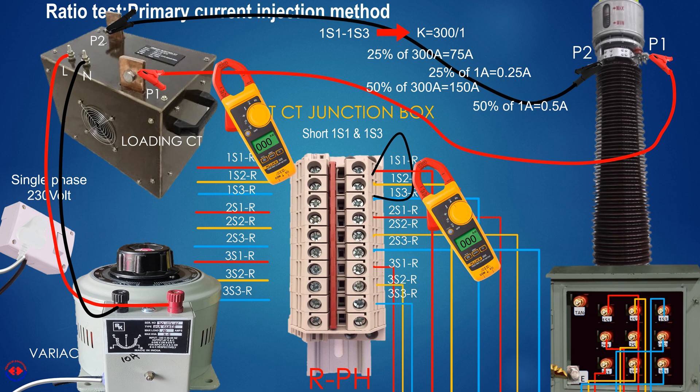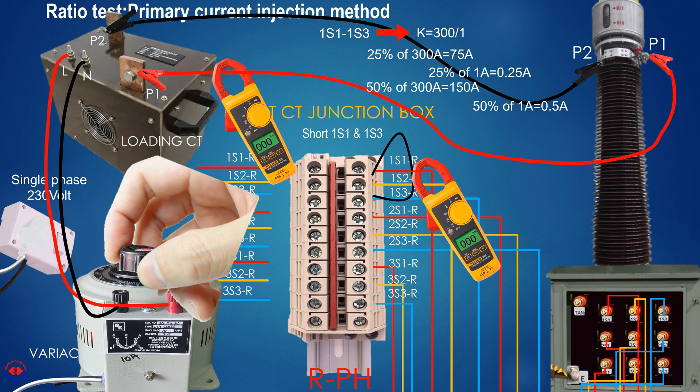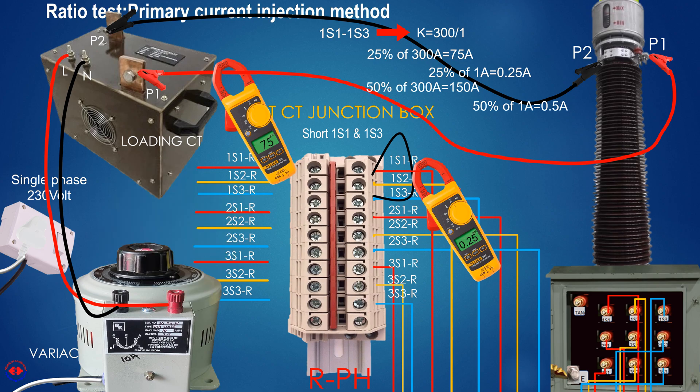Now we will set the primary to 25%, that is 75 ampere, by setting the value of variac. Eventually, the secondary will show 0.25 ampere current. This is what we were looking for to test the terminals of 1s1 and 1s3. The ratio must be verified to check the beneficial results.